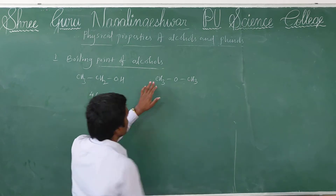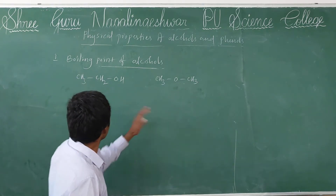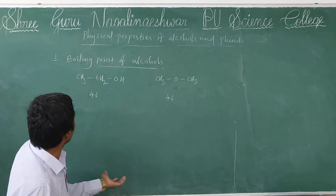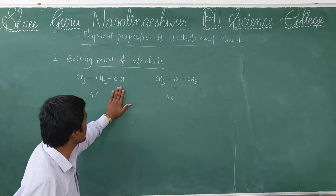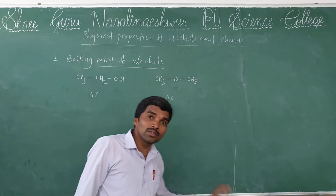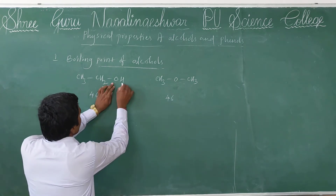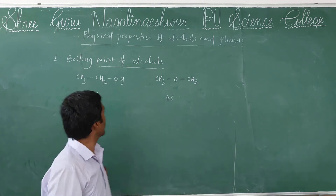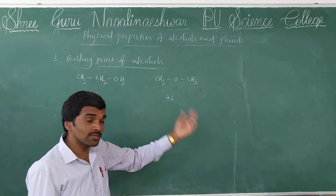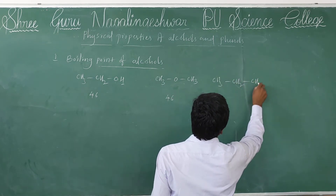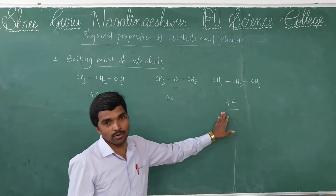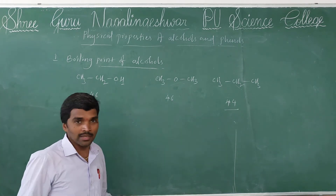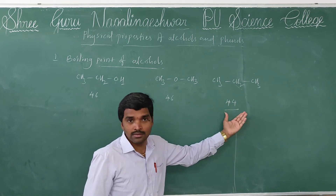For example, here I am taking methoxymethane. Methoxymethane also has a molar mass of 46 only. But in these two compounds, the boiling point is higher for ethanol. Why? Because ethanol forms intermolecular hydrogen bonds — oxygen and hydrogen are present, so due to this O-H, alcohols participate in intermolecular hydrogen bonding. That is why alcohol boiling point is higher than ether, as well as propane, which has a molar mass of 44. By this example, we can observe that alcohols have a higher boiling point than ethers and alkanes.